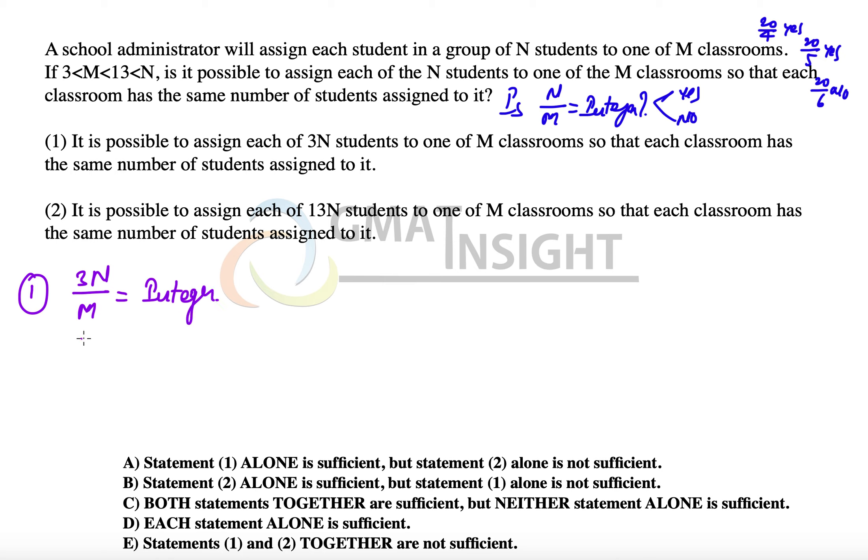Let's quickly check. In such statements it's very important that we try to prove that the statement is not sufficient, so I would like to choose some smart numbers. Case number one: I choose N equal to 20 and M equal to 5. So 3×20/5 is an integer and 20/5 is also an integer, so the answer to the question is yes.